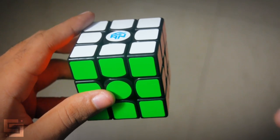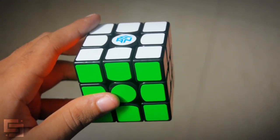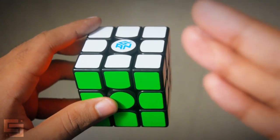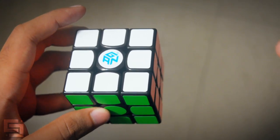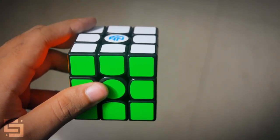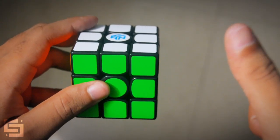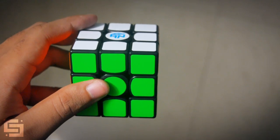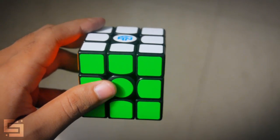This solve was a pretty straightforward solve. It was pretty straightforward CFOP. Cross, F2L, OLL and the only thing out of the ordinary was the PLL skip. Congratulations to Felix for tying the world record single and thank you for watching this video. Give this video a like and also subscribe for more cubing content. I will see you in my next video. Take care guys and bye.